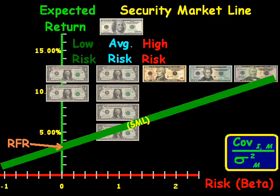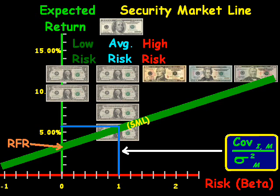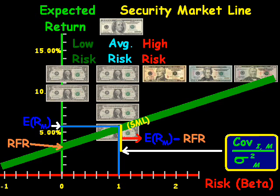Moving back to the intersect point — the RFR, or risk-free rate of return — that is the point where the SML slope intersects. The line at beta equal to 1, or the market beta, intersects at the expected return of the market portfolio, written as ERM. The difference between ERM and the risk-free rate is essentially the market risk premium. Beta can actually be negative, where the expected return is lower than that of a risk-free security.